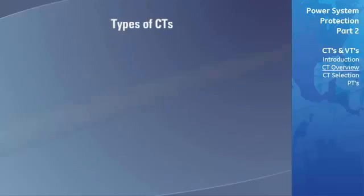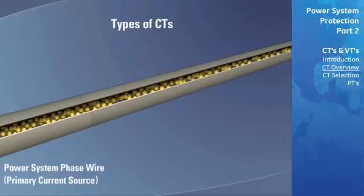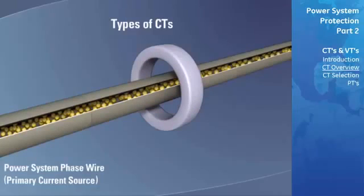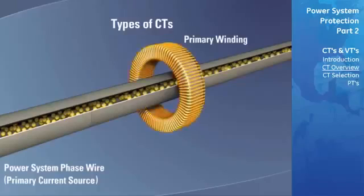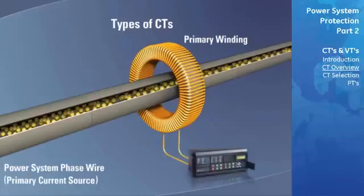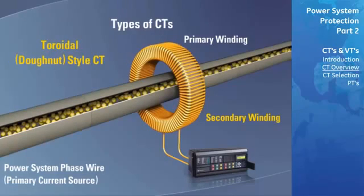A common current transformer construction is one in which the power system phase wire is passed through the hole in the center of an annular core or ring, which is called a window. This forms the primary winding. A second insulated wire is then wound around the core and then brought to the relay for measurement. This is known as the secondary winding. A CT with this type of construction is typically referred to as a toroidal, or donut-style CT.